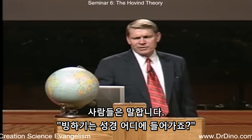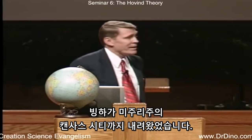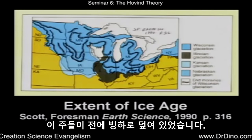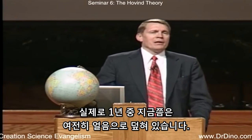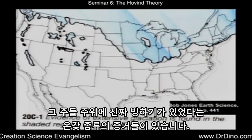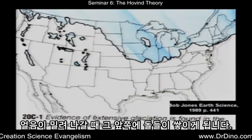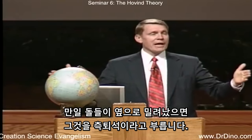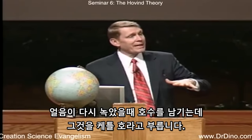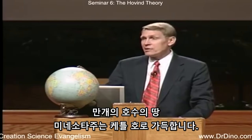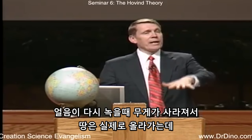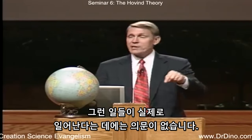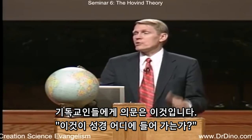Where does the Ice Age fit into the Bible? There certainly was an Ice Age — ice came all the way down to Kansas City, Missouri. States like Ohio, Indiana, Michigan, and Minnesota used to be covered by ice. When ice pushes out it piles rocks in front — called a terminal moraine; rocks to the side are a lateral moraine. When the ice melts back it leaves behind kettle lakes — Minnesota, the land of 10,000 lakes, is full of them. As ice melts back, the ground lifts up because the weight is gone — called isostatic rebound. The question for the Christian is: where does this fit into the Bible, and what froze the mammoths?